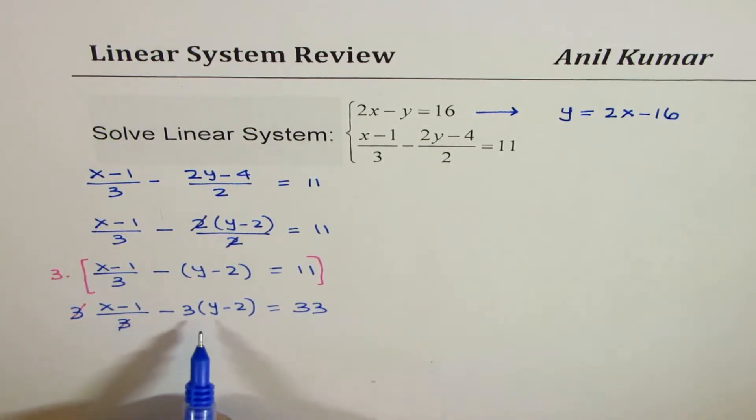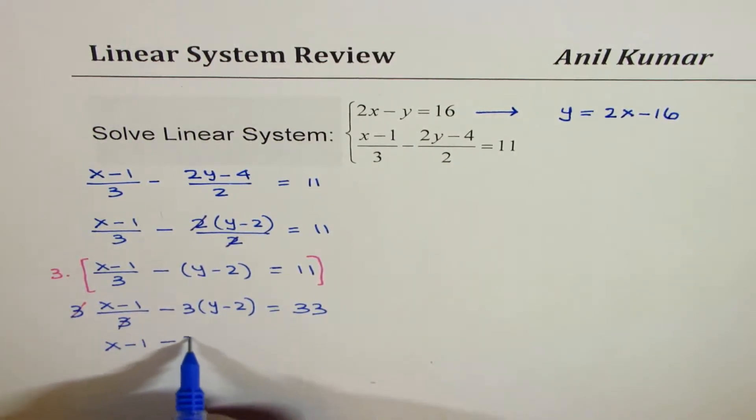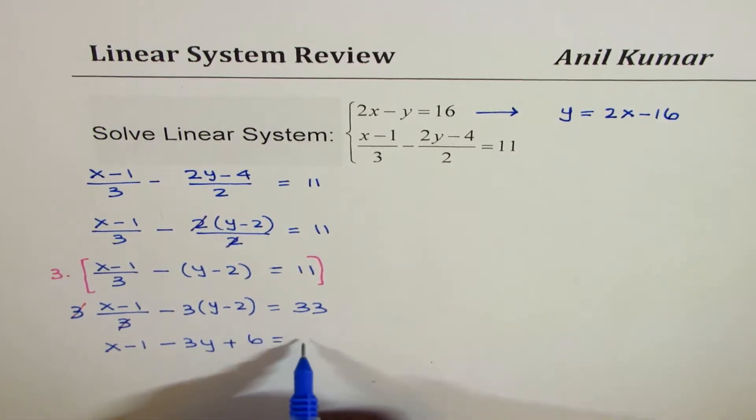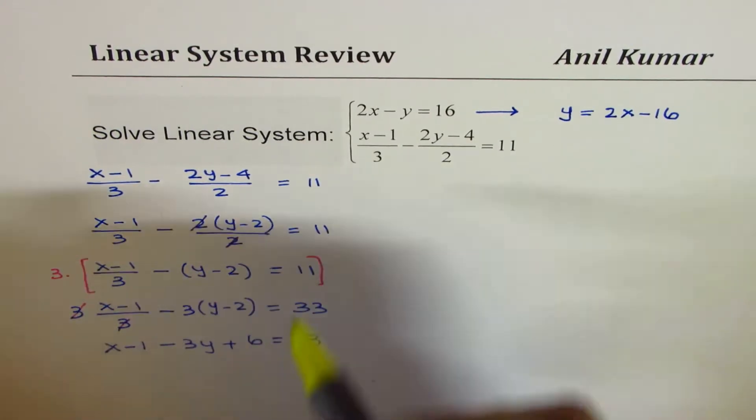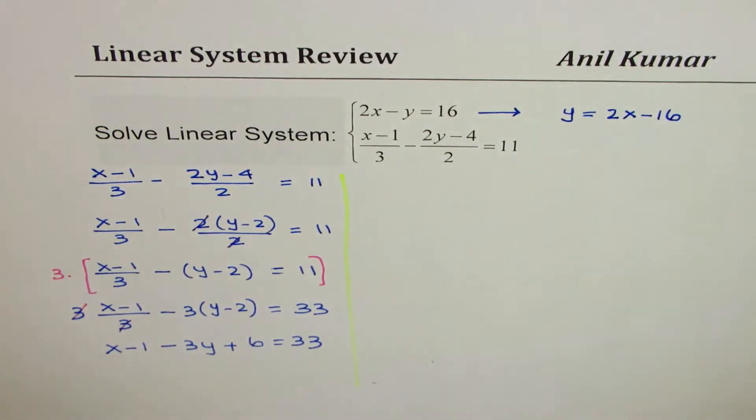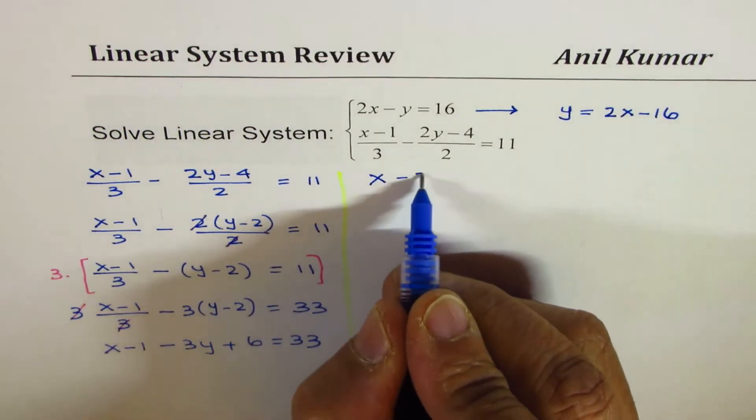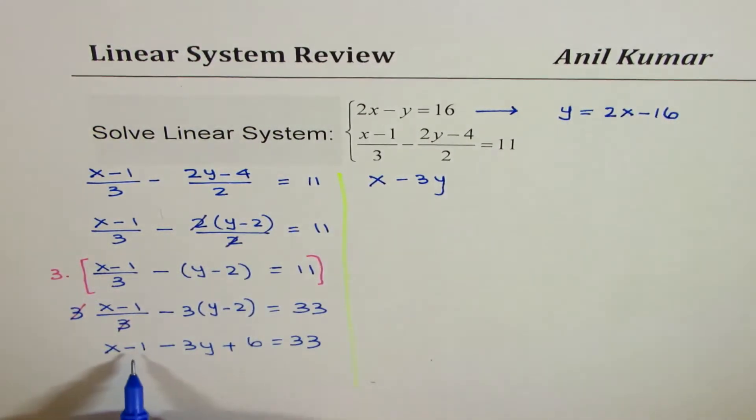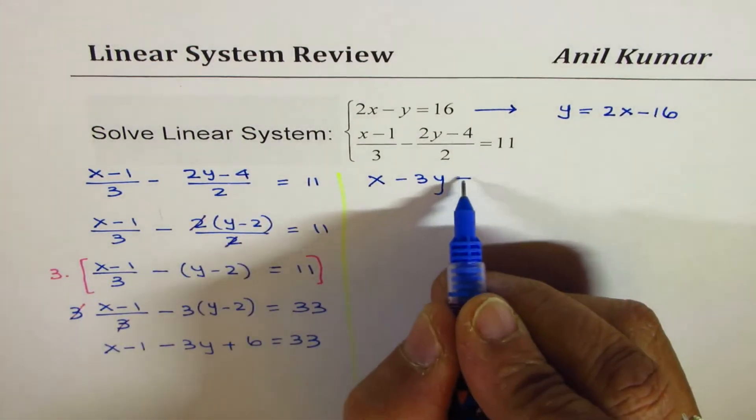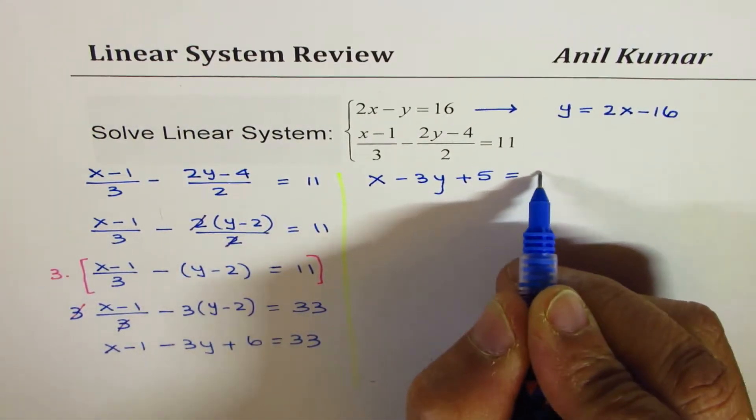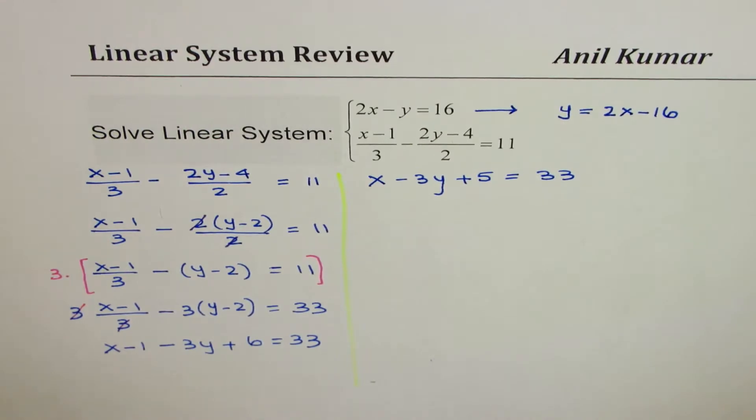Now you could expand and simplify. So we get x minus 1 minus 3y plus 6 equals 33. So let's take it to the right side. I'm running out of space here. So I'll keep the constants on the right side, writing this equation as x minus 3y minus 1 plus 6 is plus 5 equals 33. So we just rewrote this by combining these two terms.